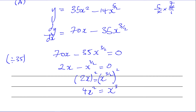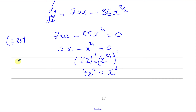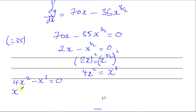Now I'll bring everything to one side: 4x squared minus x cubed equals zero. Taking out the common factor x squared gives x squared times (4 minus x) equals zero.